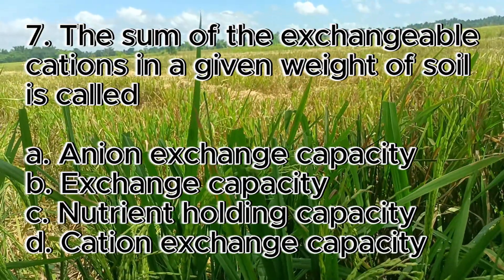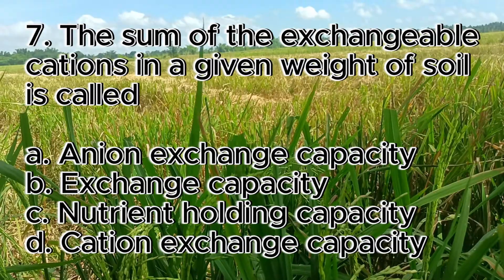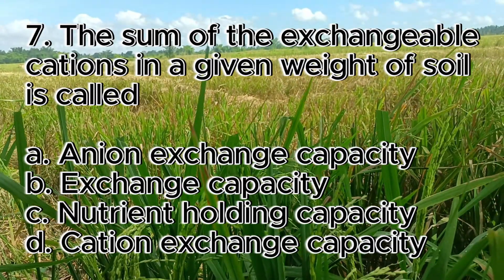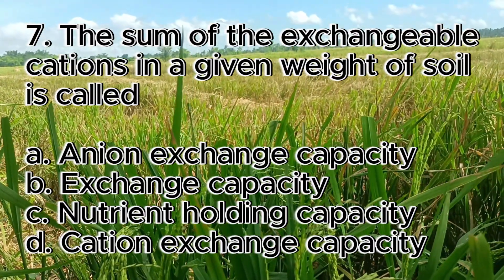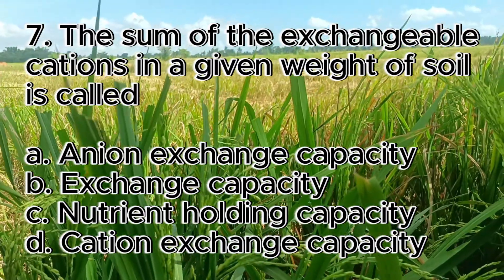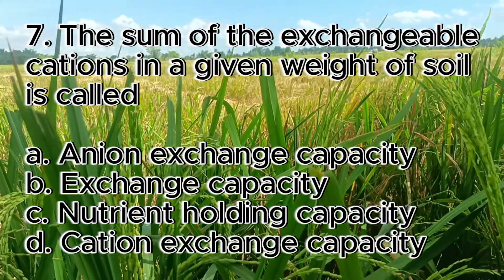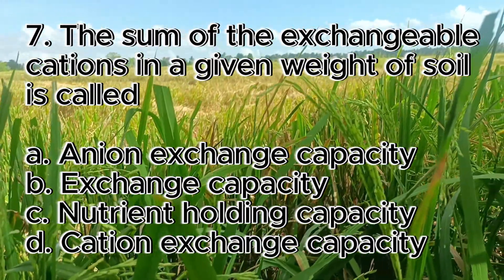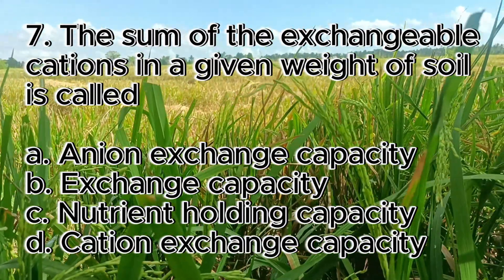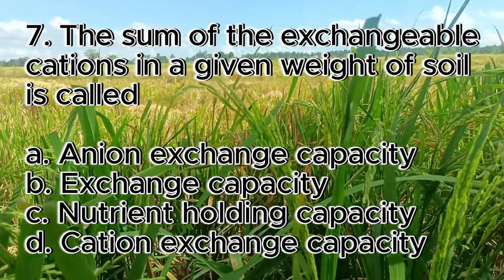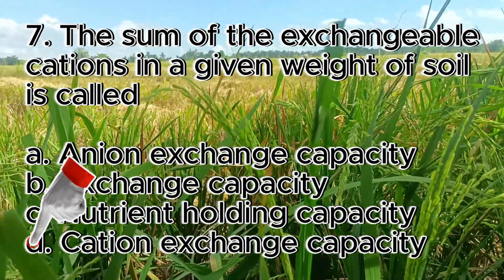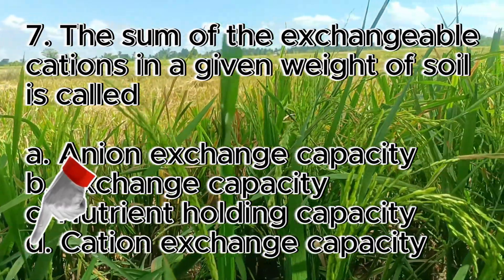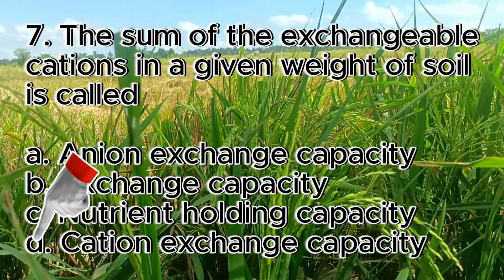Number 7. The sum of the exchangeable cations in a given weight of soil is called. A. Anion exchange capacity, B. Exchange capacity, C. Nutrient holding capacity, D. Cation exchange capacity. The answer is letter D, cation exchange capacity.